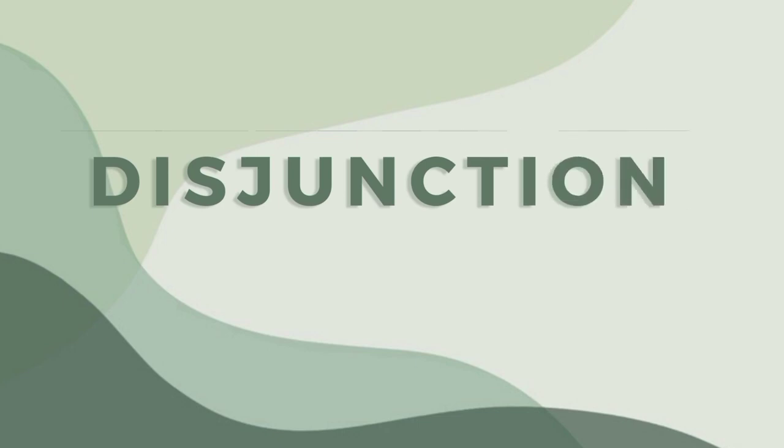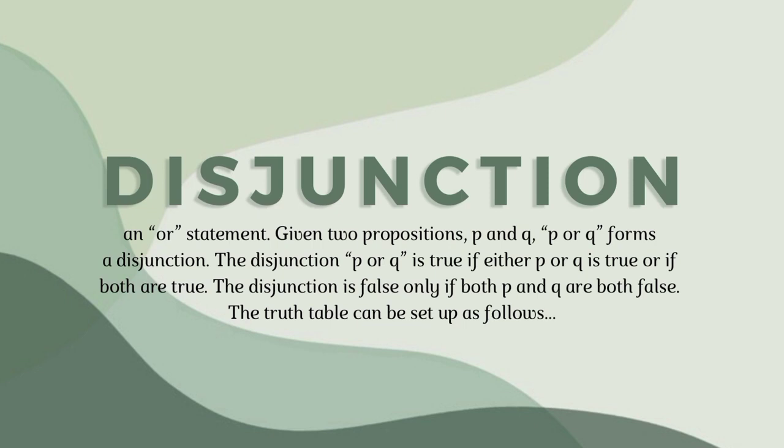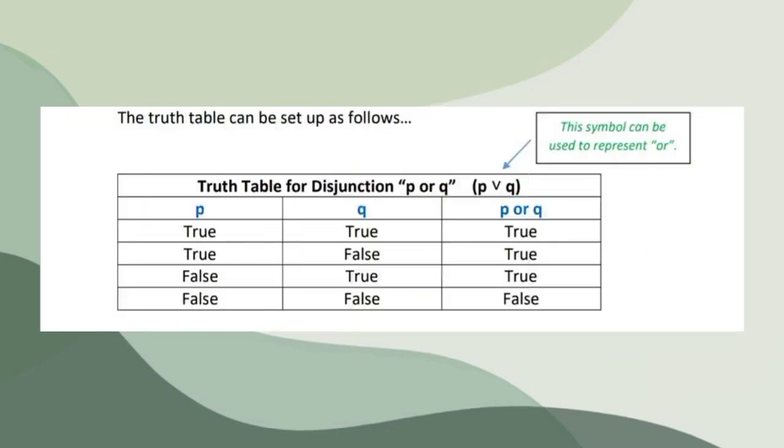Disjunction. An OR statement given two propositions P and Q. P or Q forms a disjunction. The disjunction P or Q is true if either P or Q is true or if both are true. The disjunction is false only if both P and Q are both false. The truth table can be set up as follows.